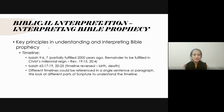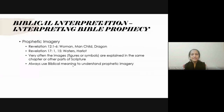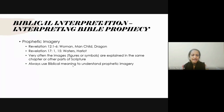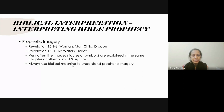That's the first principle — the timeline — when interpreting biblical prophecy. The second is prophetic imagery. All of us have read or heard parts of Revelation and Daniel, where there is a lot of imagery that can be very difficult to understand. We have to rightly interpret what these images mean. Let's look at Revelation 12:1-6 as an example.